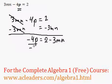Then we can just divide both sides by negative 4. And p is going to be equivalent to 2 minus 3mn all over negative 4. This is the answer.